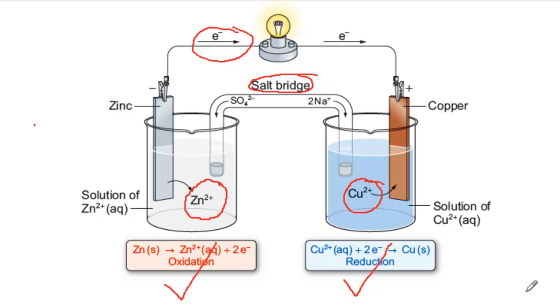So there's a build-up of positive charge on the left and negative charge on the right. And without the salt bridge, this would prevent any current flowing.